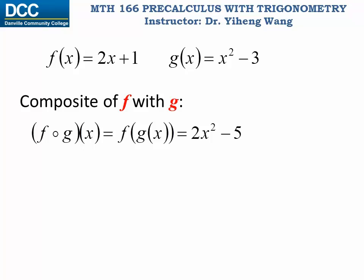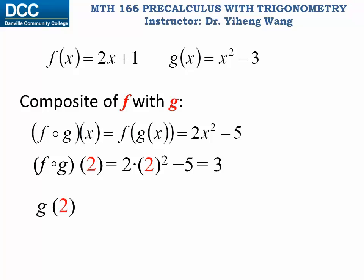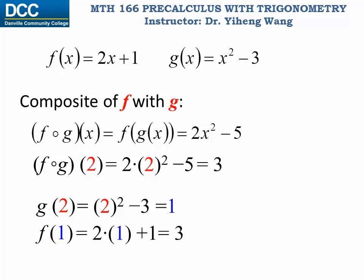If we want to evaluate this composite function at x equals 2, we can take the derived function 2x squared minus 5, substitute x with 2, and get 3. Alternatively, we can first evaluate g at x equals 2: 2 squared minus 3 equals 1. Then that output of g becomes the input of f: 2 times 1 plus 1 equals 3. As you can see, the two different approaches give the same answer.